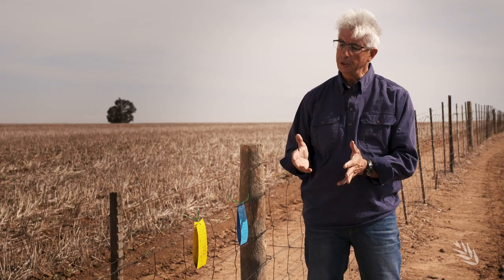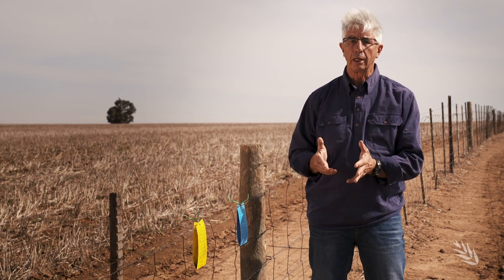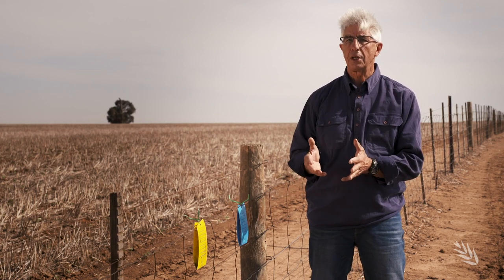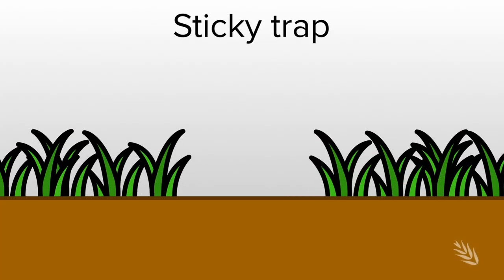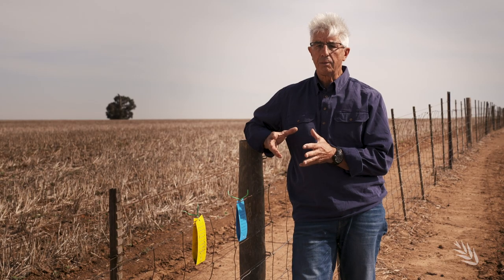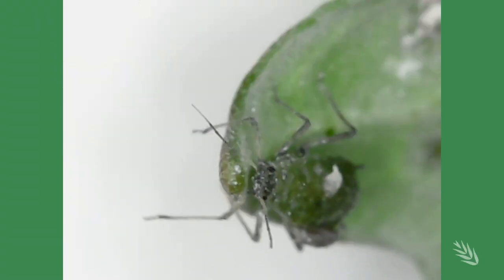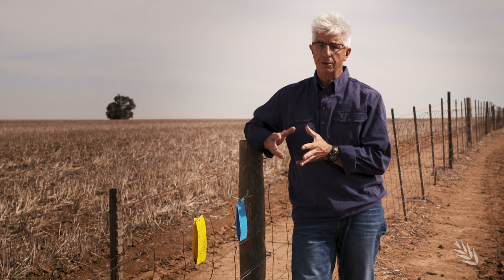They are easy to set up — it's just a matter of attaching them to the fence line, usually close to the crop, and they will last probably a month or so out in the paddock. The sticky trap will maintain its stickiness for that period. Early in the season it gives you a good idea of aphid pests like green peach aphid that might be a risk to the early crop, and later in the season we can tell what aphids and beneficial natural enemies are present in the crop as well.